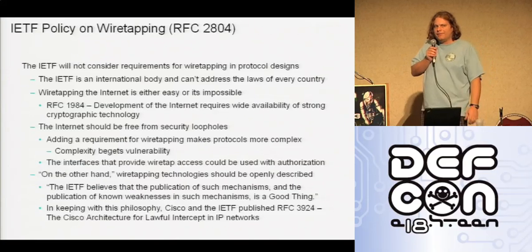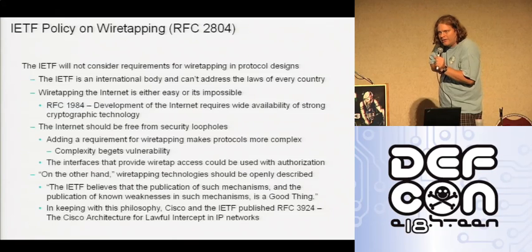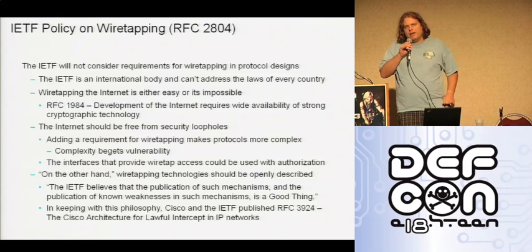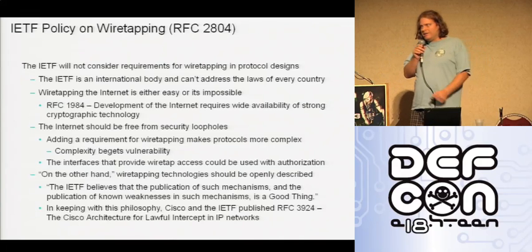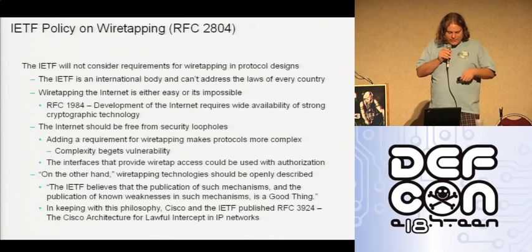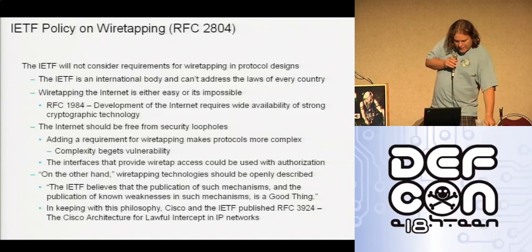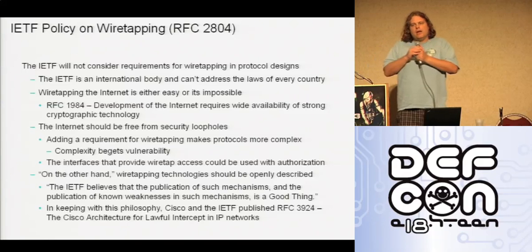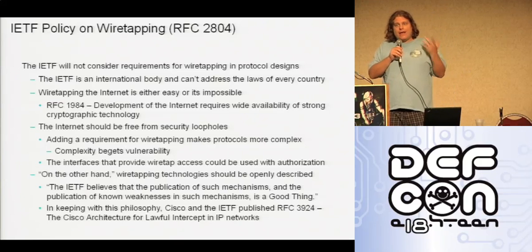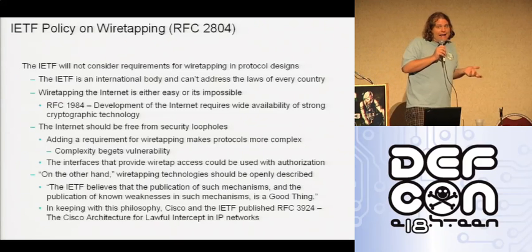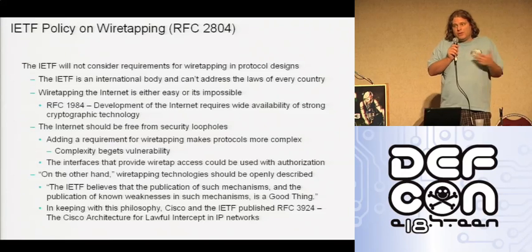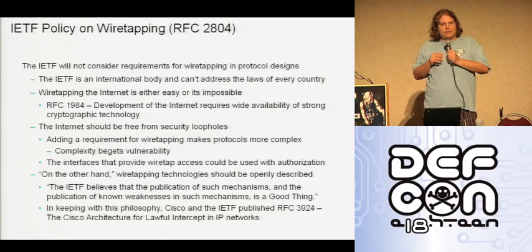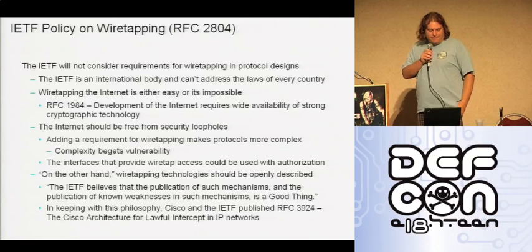The IETF got involved and published an RFC in the year 2000 discussing whether the IETF would consider wiretapping requirements when designing internet protocols. They decided they would not. One reason they stated was the perceived dichotomy: wiretapping will either be easy or impossible in the future, because we either have end-to-end encryption or we don't. If we have end-to-end encryption, you can't wiretap; if we don't, you can hook up somewhere unencrypted without needing a built-in interface.